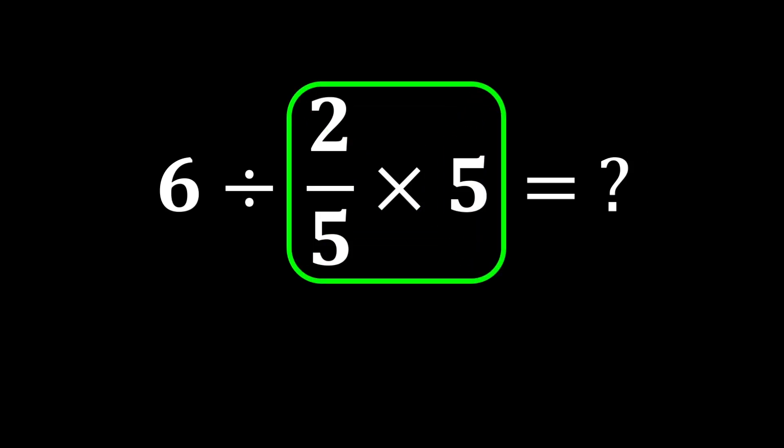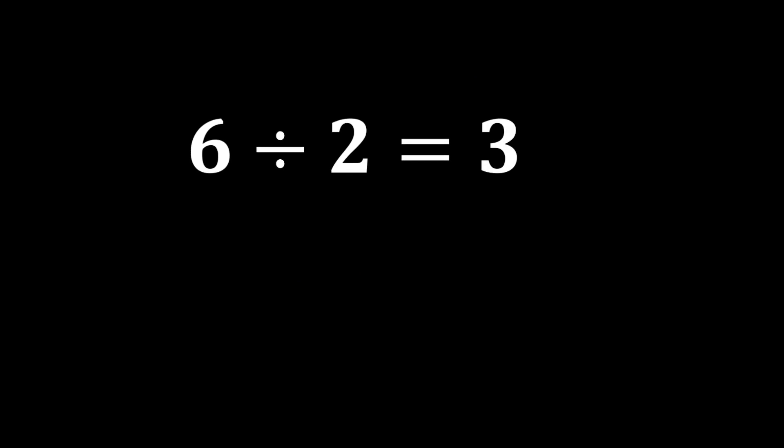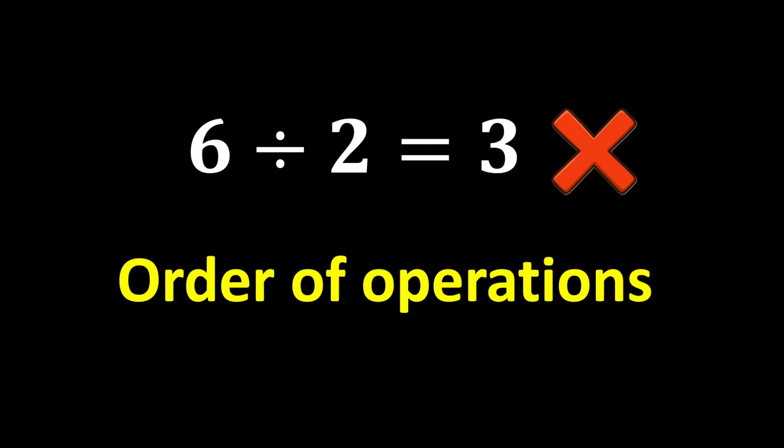First, we perform this multiplication, 2 over 5 multiplied by 5. The 5 simplify with each other, and only 2 remains. In the end, 6 divided by 2 becomes 3. But this answer is not correct because we did not follow one of the most important rules of mathematics. This rule is called the order of operations.